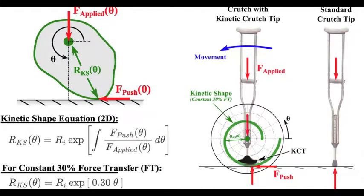This enhanced performance is enabled by a kinetic shape that converts a downward force into a torque that assists or resists the user's motion.